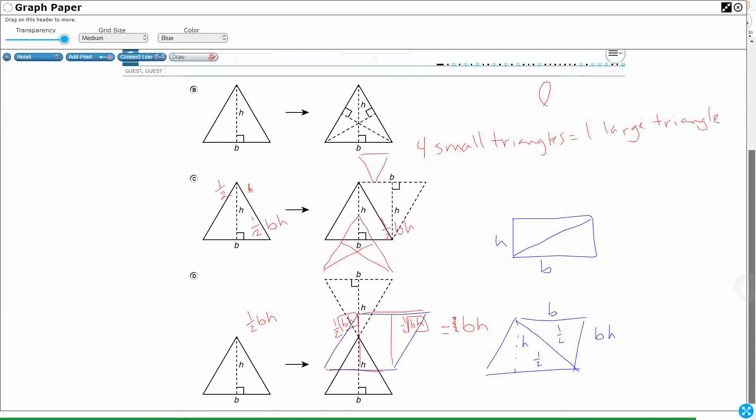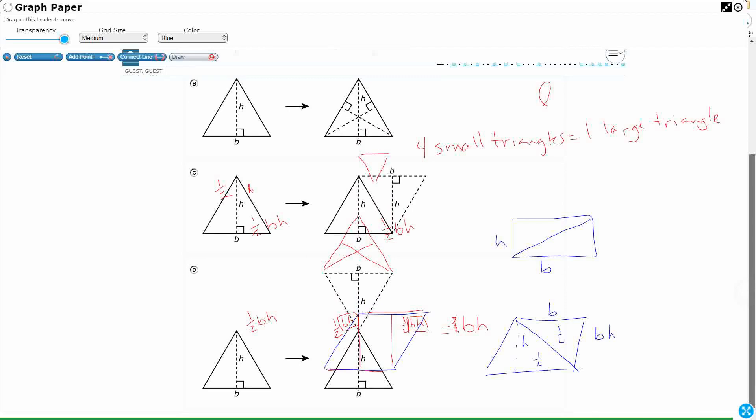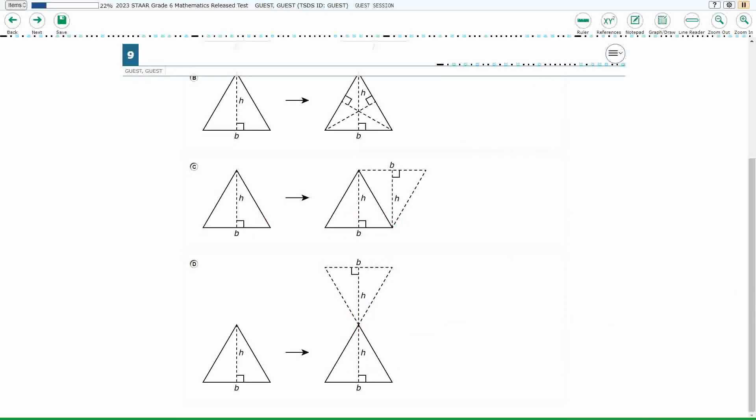D just doubles the triangle, but it doesn't make any type of shape, not like C makes a parallelogram. So our answer here is going to be C. A parallelogram is base times height. So a triangle, two triangles is one-half base times height.